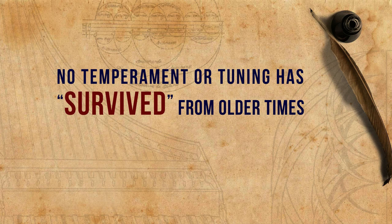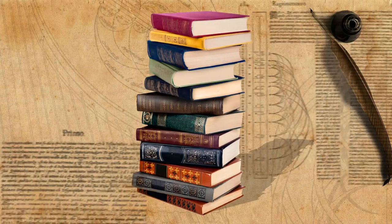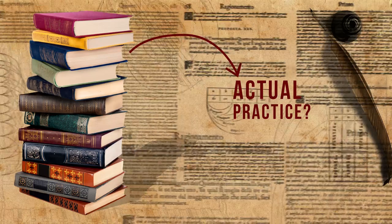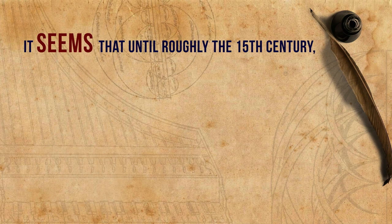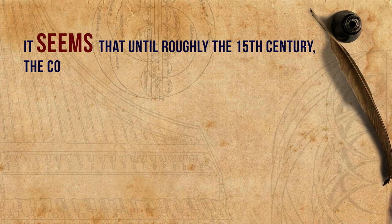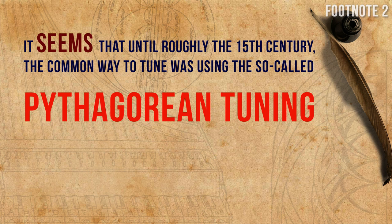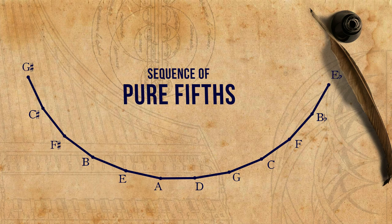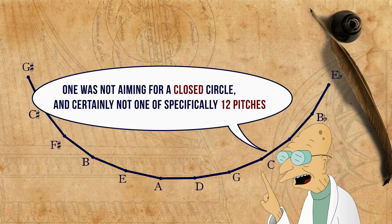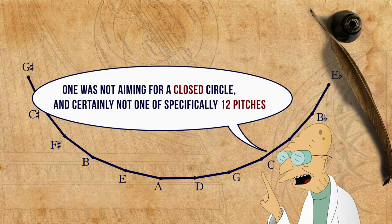Generally, no temperament or tuning has survived from older times. We can only learn about temperaments from textual descriptions, but the connection between those and actual practice can only be assumed. Having said that, it seems that until roughly the 15th century — the medieval period if you wish — a common way to tune was using the so-called Pythagorean tuning. This is in fact merely a tuning and not a temperament, as nothing is tempered. It is built from a sequence of pure fifths in which its two ends never meet. One was not aiming for a closed circle, and certainly not one of specifically 12 pitches, as early instruments often had fewer than 12 pitches per octave.